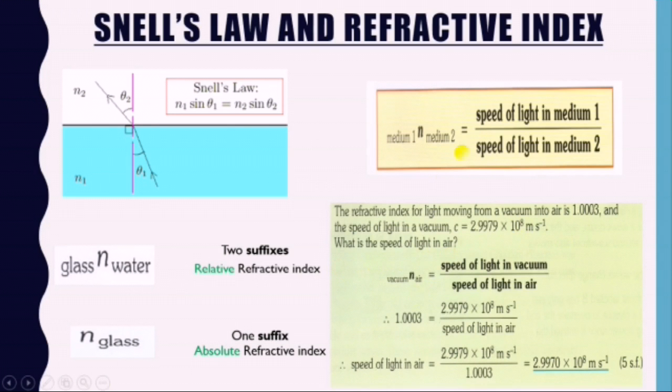We will substitute the values of refractive index and speed of light in vacuum and we get speed of light in air equal to 2.9970 times 10 raised to the power 8 meters per second, which is approximately the same as that of speed of light in vacuum.